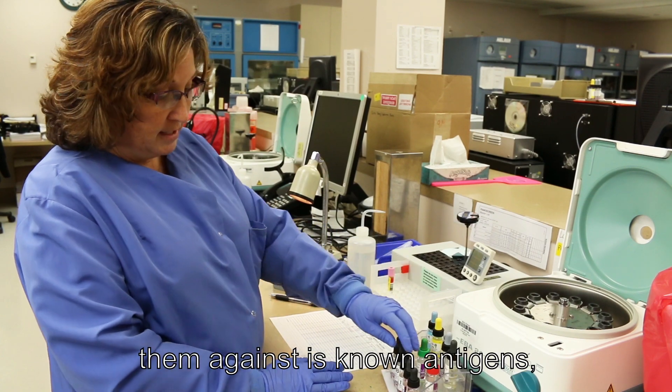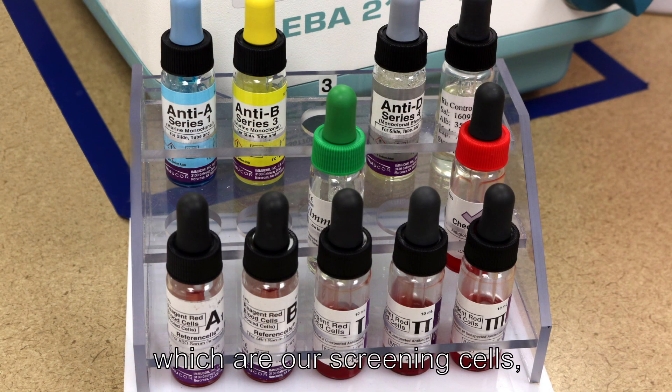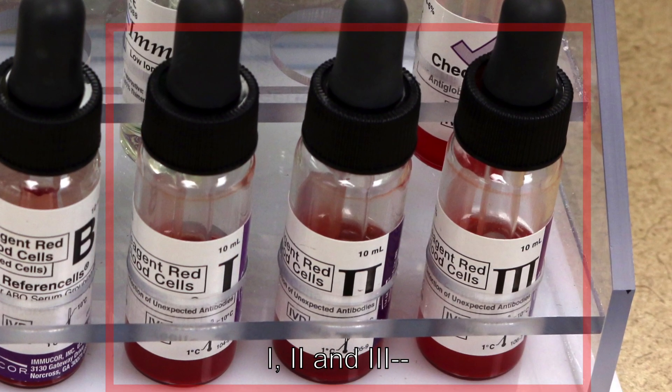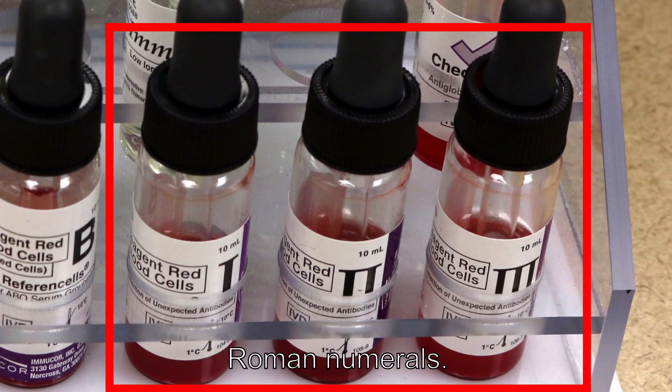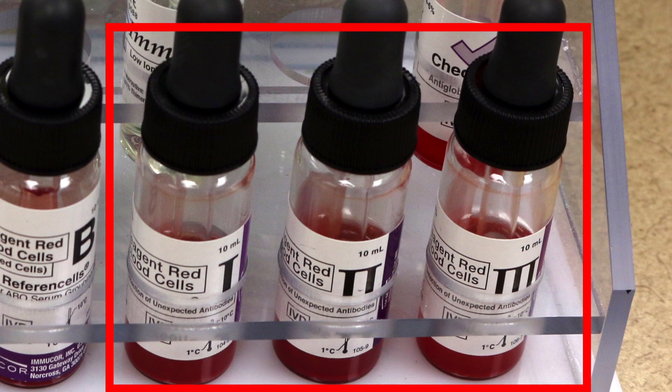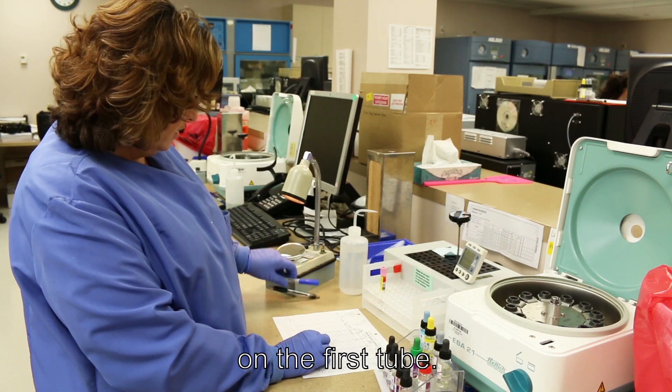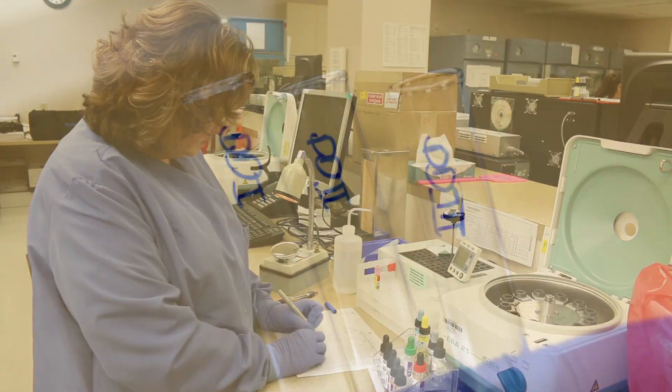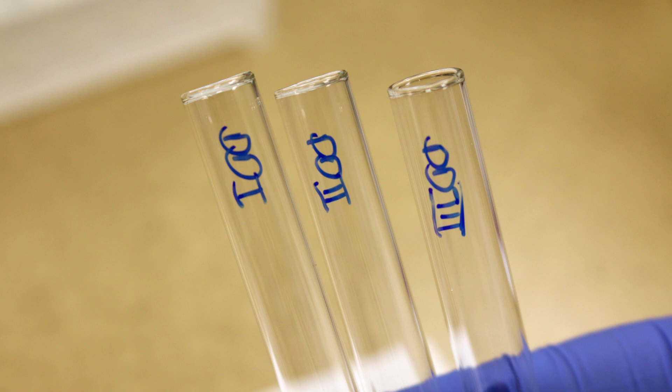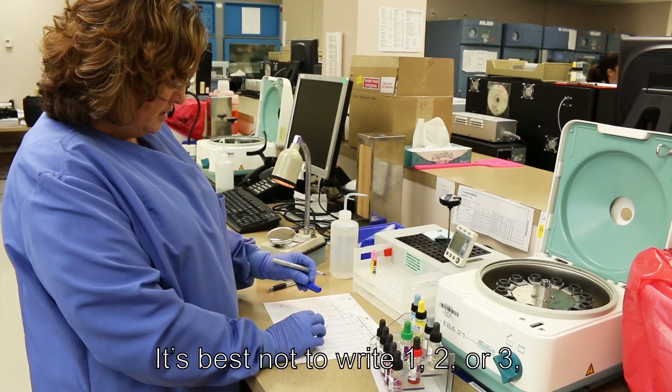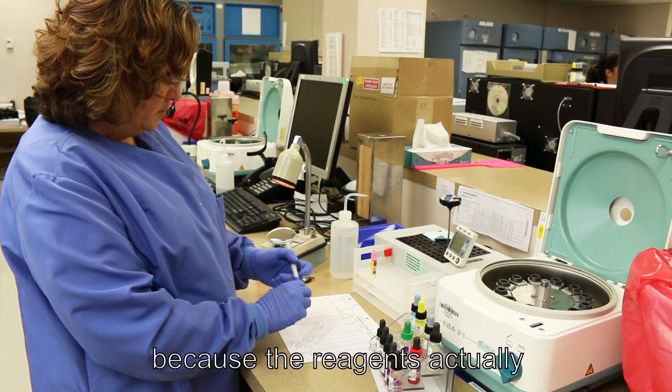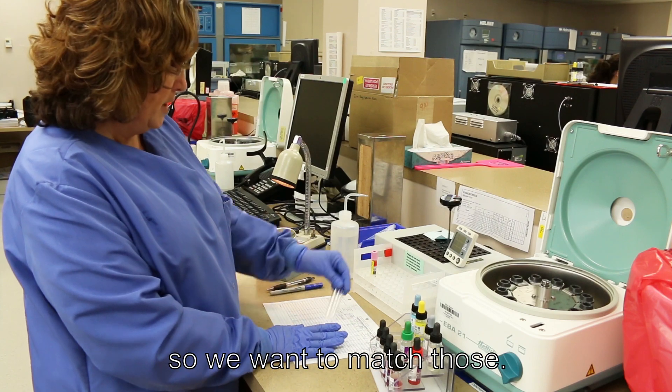So what we're going to test them against is known antigens, which are our screening cells, also called surges screens, 1, 2, and 3. Those are labeled with Roman numerals. So when we label our tubes, we're going to go back, use the patient's initials, Roman numeral 1 on the first tube, patient initials Roman numeral 2, and on the third tube we're going to do Roman numeral 3. It's best not to write 1, 2, or 3, because the reagents actually have the Roman numerals, so we want to match those.